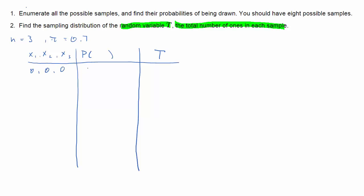So the first possible sample would be all 0s. The probability for that would be the probability of 0 to the power of 3, and there would be 0 ones. Then 0, 0, 1, probability is 0.3 squared times 0.7, one 1.